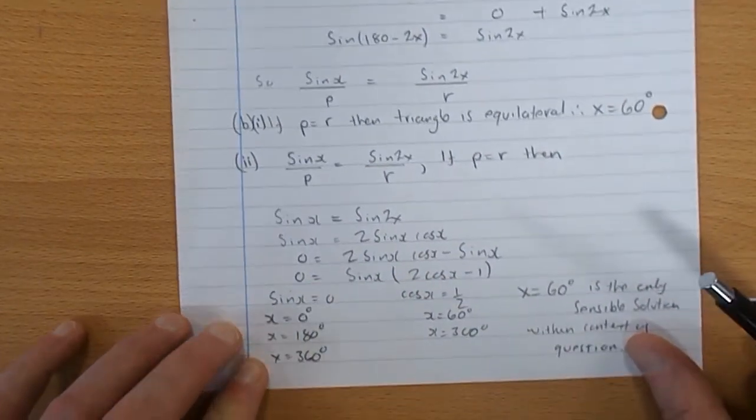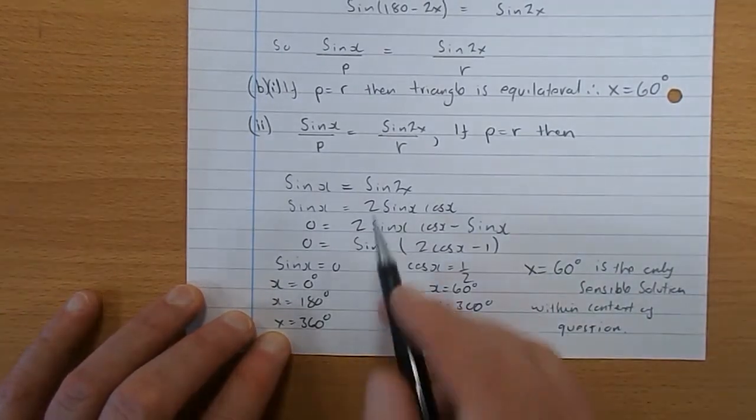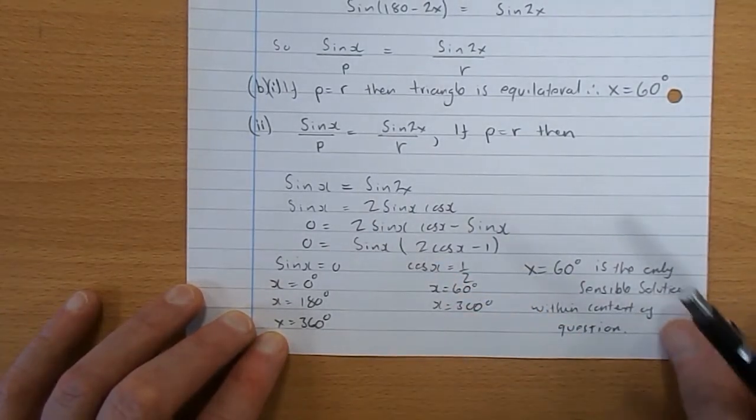Sine 2X and sine X are both being divided by the same thing. So they must, in fact, equal themselves. So sine X must equal 2 sine X cos X. That's my expansion for sine 2X, 2 sine X cos X.